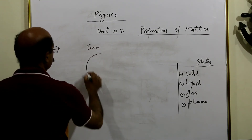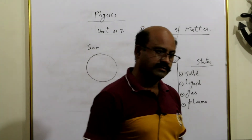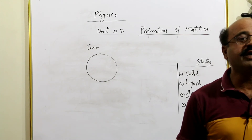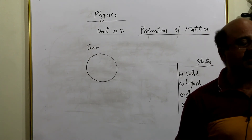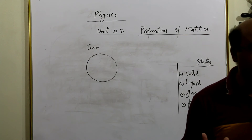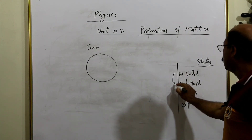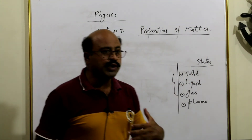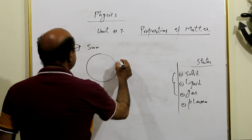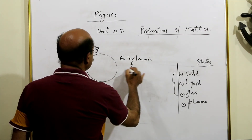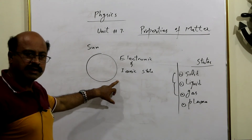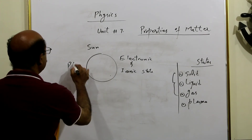Sun ki misal le lete hain. Aap ko lagta hai sun solid hoga? Aap ko lagta hai sun ki upar kuch paani ya liquid hoga? Nahi. Kyun? Woh ek burning matter hai. Is ke andar itna zyada temperature hai ke koi cheez solid, liquid, ya gas ki soorat mein stay nahi kar sakti. Woh temperature koi bhi un tinon states ko decompose kar deta hai. Jab koi atom break hota hai toh woh positive or negative ions mein convert ho jata hai. Toh is ke andar jo form of matter hai woh electronic aur ionic state hai — so electronic and ionic state of matter is named as plasma.